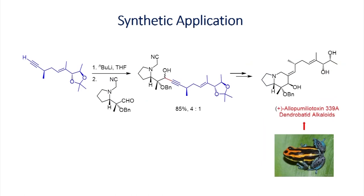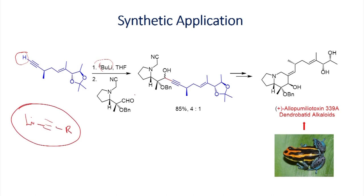Another example involves a terminal alkyne that also has a double bond and an ester functional group. This can be selectively reacted with n-BuLi since the terminal alkyne proton is acidic; it can be deprotonated to form the corresponding lithium intermediate. This intermediate undergoes addition reaction with an aldehyde functional group to give the addition product, which has been further converted into an alkaloid by several steps, showing that organolithium reagents play a crucial role in the synthesis of complex molecules.